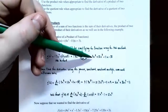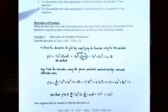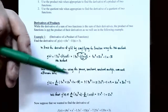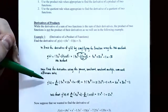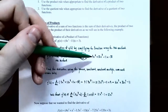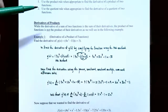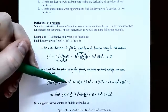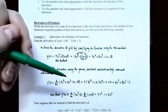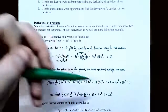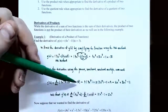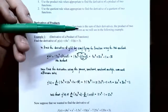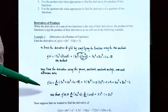So g(x) = 4x⁴ + 12x³ - 11x - 33, which is a polynomial. We know how to differentiate this using the power rule, constant rule, constant multiple rule, and sum/difference rules. So g'(x): derivative of 4x⁴ is 16x³, derivative of 12x³ is 36x², derivative of -11x is -11, and derivative of -33 is 0. Therefore g'(x) = 16x³ + 36x² - 11.